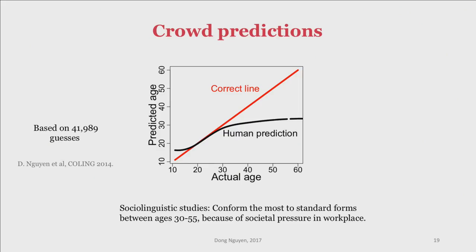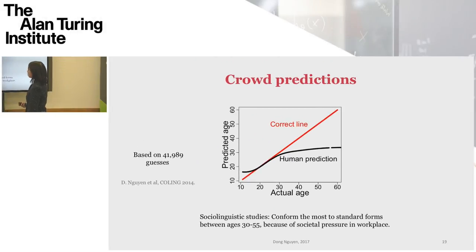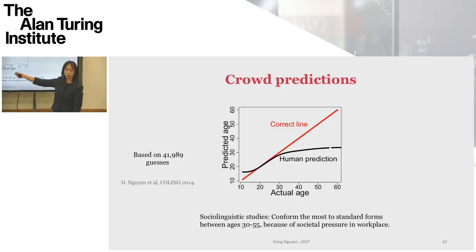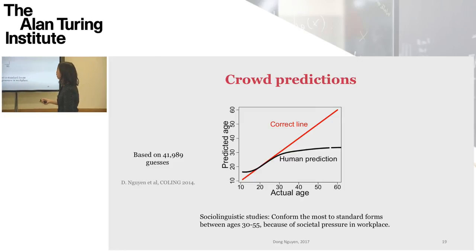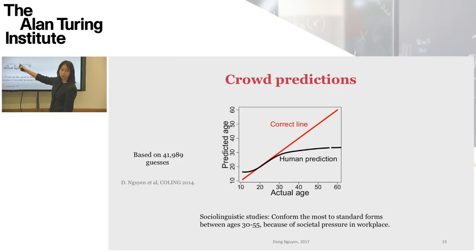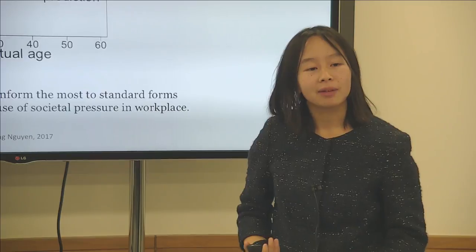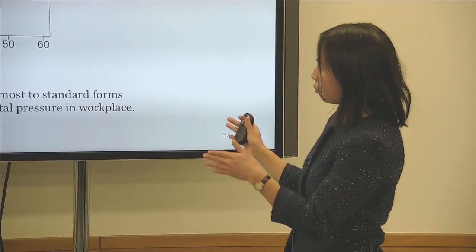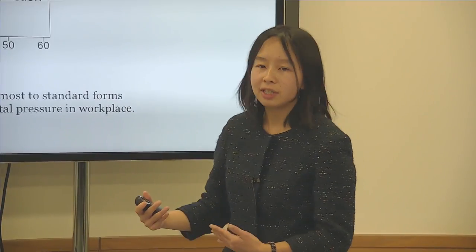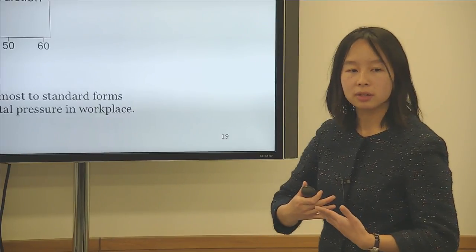We also developed an online game where we asked people to do the same task, and we see something very similar. The red graph shows the perfect line where actual age would match predicted age, and the black line is what we got based on human predictions — based on almost 42,000 guesses. We see that humans tend to overpredict the ages of younger users but really underpredict the ages of older users. Going back to social heuristics, there are studies suggesting that between 30 and 55 years, people tend to talk in a more standardized way because they're concerned about making a career and want to be taken seriously. So it's in these age ranges that people tend to use standardized language, and it's hard to make fine-grained estimates based on age, at least on Twitter.